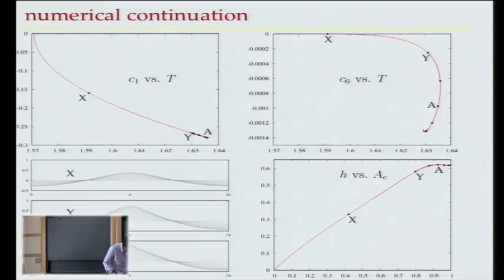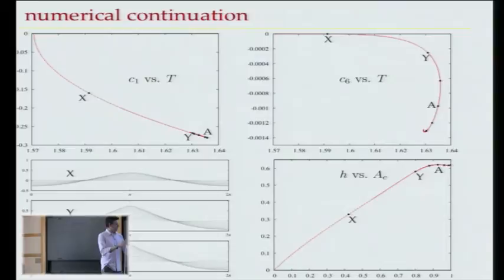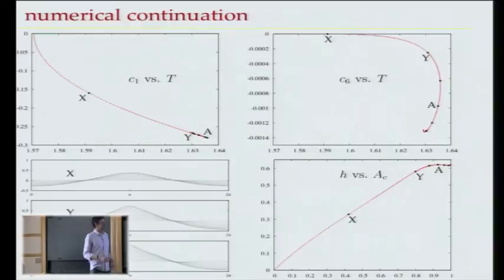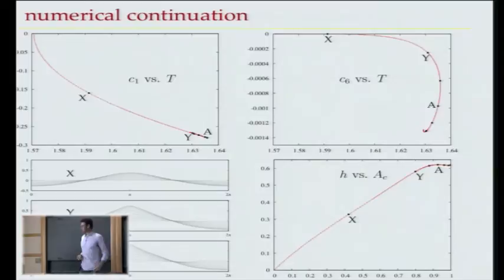As you move along the curve, the peak sharpens. The traditional way to plot these things is crest acceleration versus wave height. Wave height is half the crest-to-trough distance. Crest acceleration is — at the moment the wave comes to rest — the acceleration of a particle at the crest as it free-falls. Penny and Price thought this was the parameter that would lead to a singularity. Mercer and Roberts found that as you increase this, eventually there's a turning point and it starts to decrease.